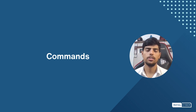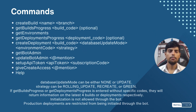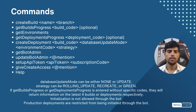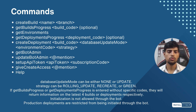The commands the bot currently offers include: create build, get build progress, get environment details, create deployment, get deployment progress, get bot admin, update bot admin, and transfer access. Access can be given to specific users, allowing them to create and manage deployments and builds. Users without elevated access can only run read commands, which are non-destructive. A help command provides an overview of all available commands.